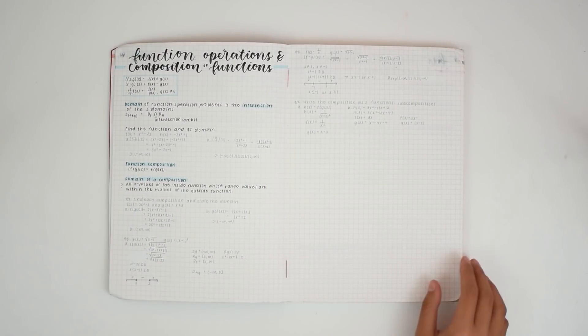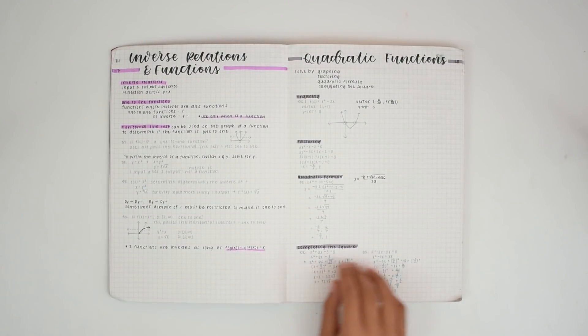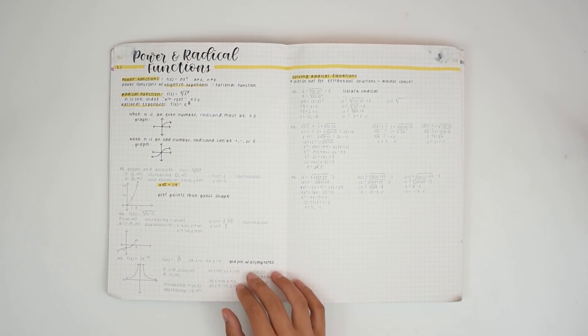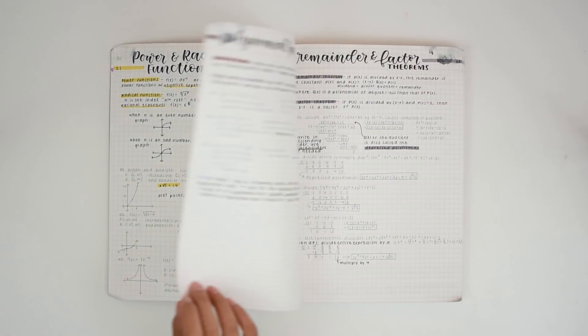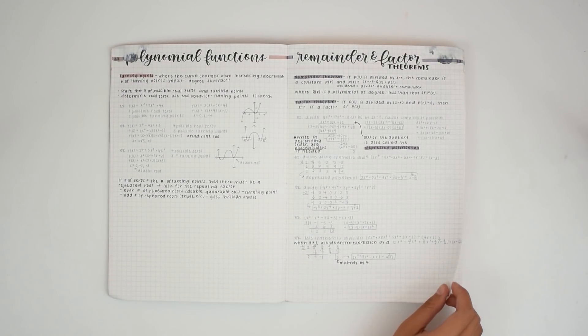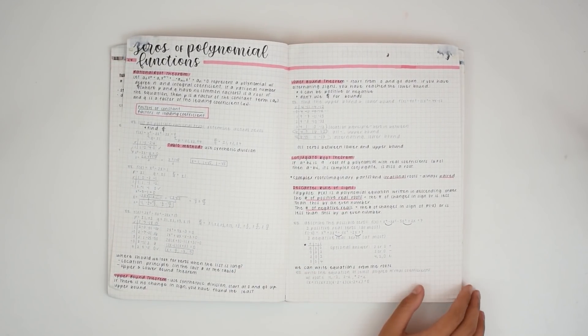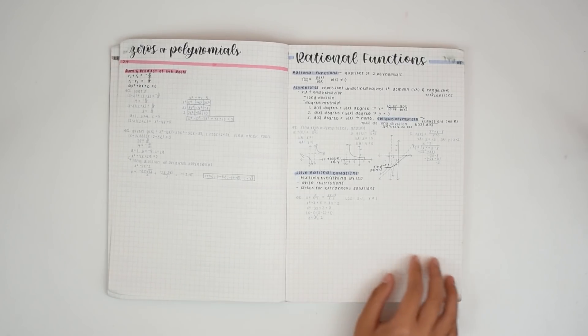To begin with, since my how to take math notes video was tragically removed, I'd like to explain a bit about how exactly these notes work. So originally, I used a black pen for information, and I would use a grey pen for example questions, as you can probably see on the screen right now.